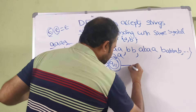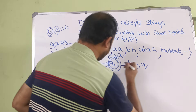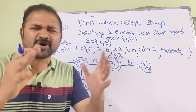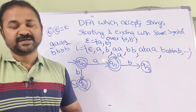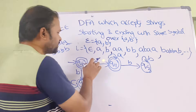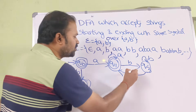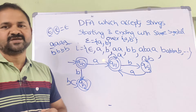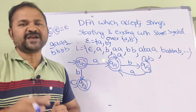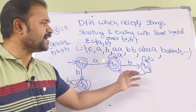Now suppose we apply B on Q1 — we move to a new non-final state Q3. If we apply any number of B's on Q3 we remain in Q3, which is not a final state, because the string started with A and must also end with A. If we then apply A on Q3, we return to Q1, which is the final state.